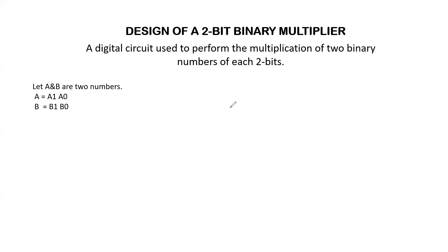Hello friends. In this video we will discuss the design of a 2-bit binary multiplier. A binary multiplier is a digital circuit used to perform the multiplication of two binary numbers. Since it is a 2-bit binary multiplier, each number should be represented with 2 bits.